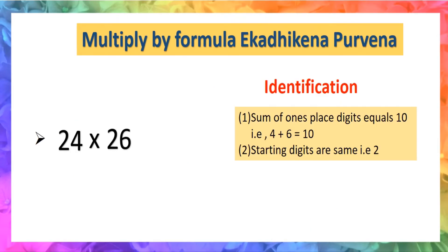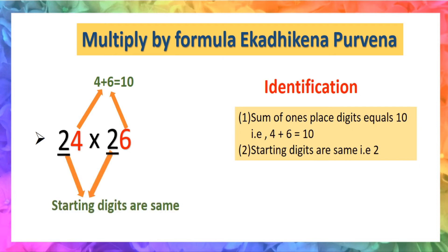Let's see an example: 24 × 26. The last digit of 24 is 4 and the last digit of 26 is 6. The sum of the last digits is 10. The starting digit of both numbers is the same — that is, 2. So in this question, we can apply Sutra Ekadhiken Purven.